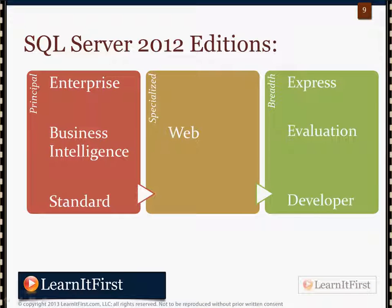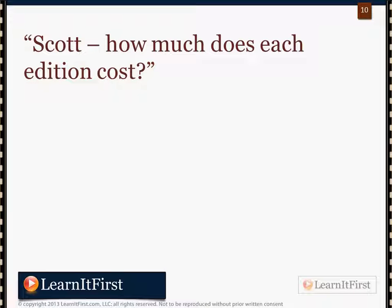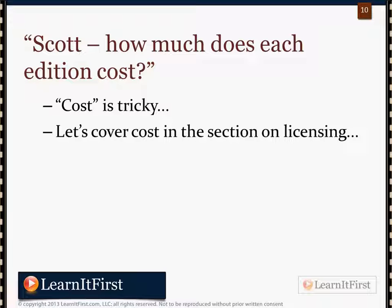There are effectively seven editions of SQL Server 2012: Enterprise, Business Intelligence, Standard, Web, Express, Evaluation, and Developer. SQL Server Compact 4.0 is not quite SQL Server 2012 Compact, so we'll focus on just these seven. The principal editions are going to be the most expensive, and the breadth editions — some are free, some cost a very small amount. We'll get into licensing in a few videos from now.